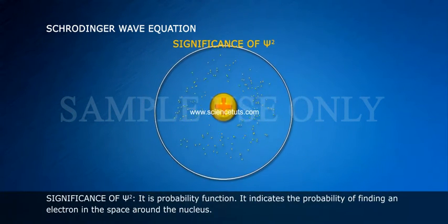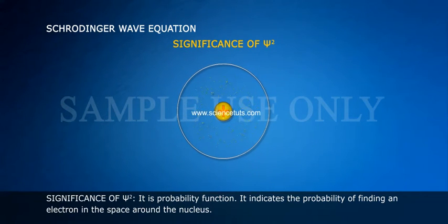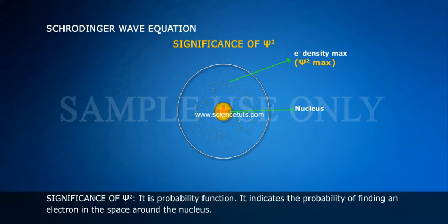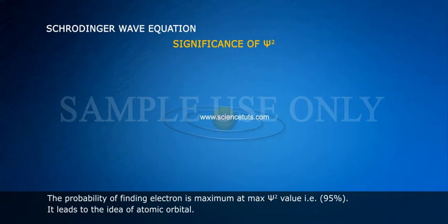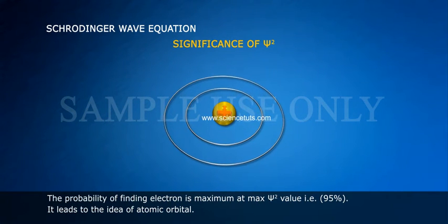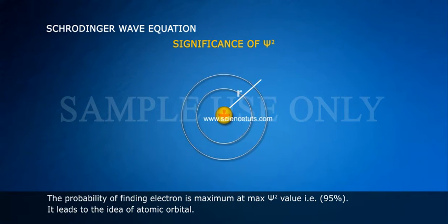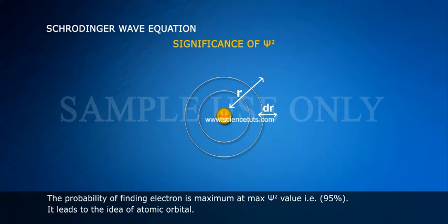Significance of ψ²: It is probability function. It indicates the probability of finding an electron in the space around the nucleus. The probability of finding electron is maximum at max ψ² value, that is 95%. It leads to the idea of atomic orbital.